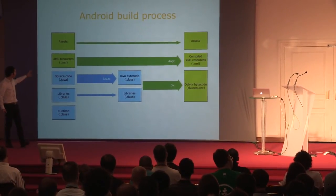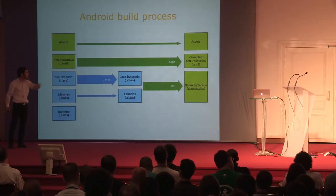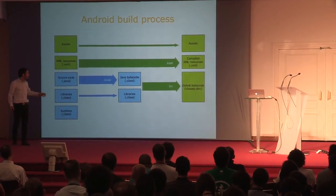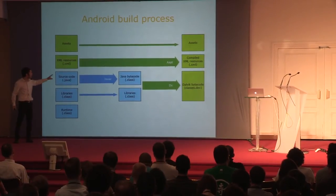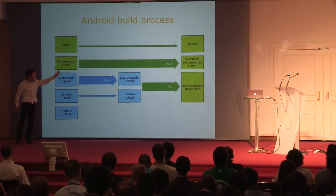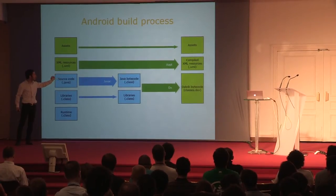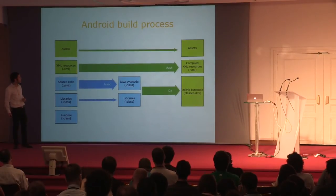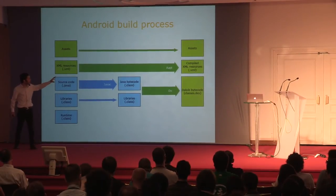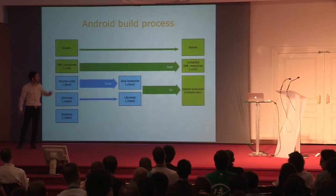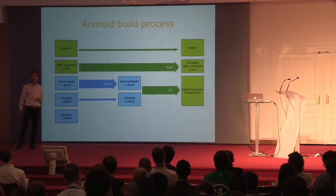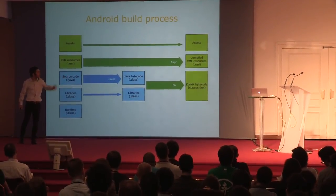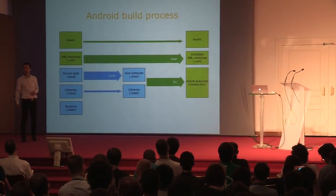The Java code undergoes an entire transformation process to end up as Dalvik bytecode. It starts off as Java bytecode, which is compiled by the traditional Oracle Java compiler, and then it's further transformed into Dalvik bytecode by the DEX compiler. The libraries are just copied but also transformed into Dalvik bytecode by the DEX compiler.